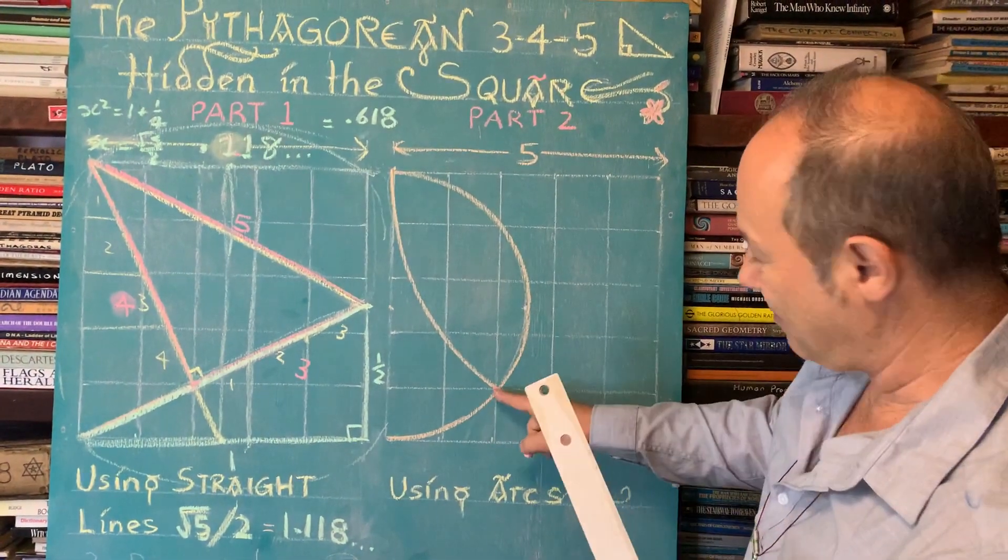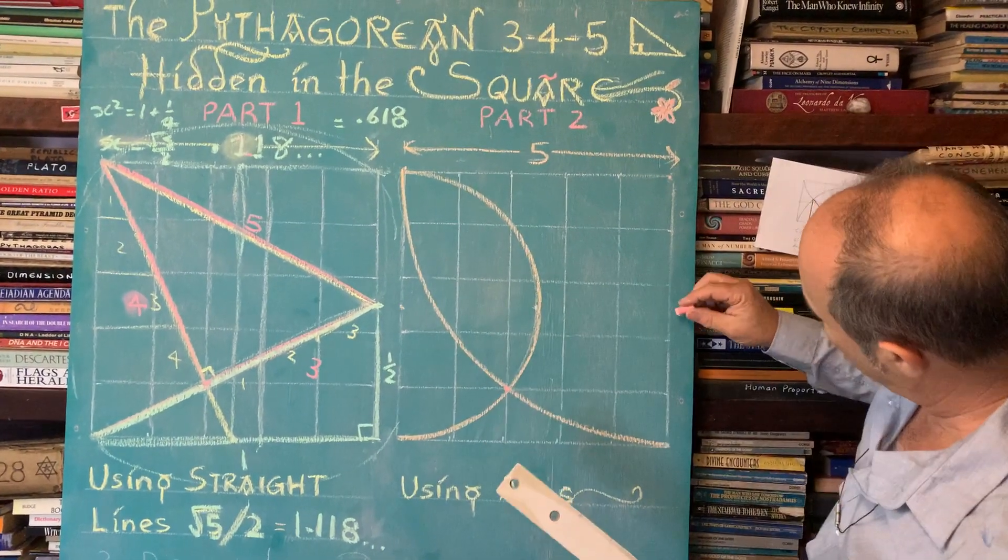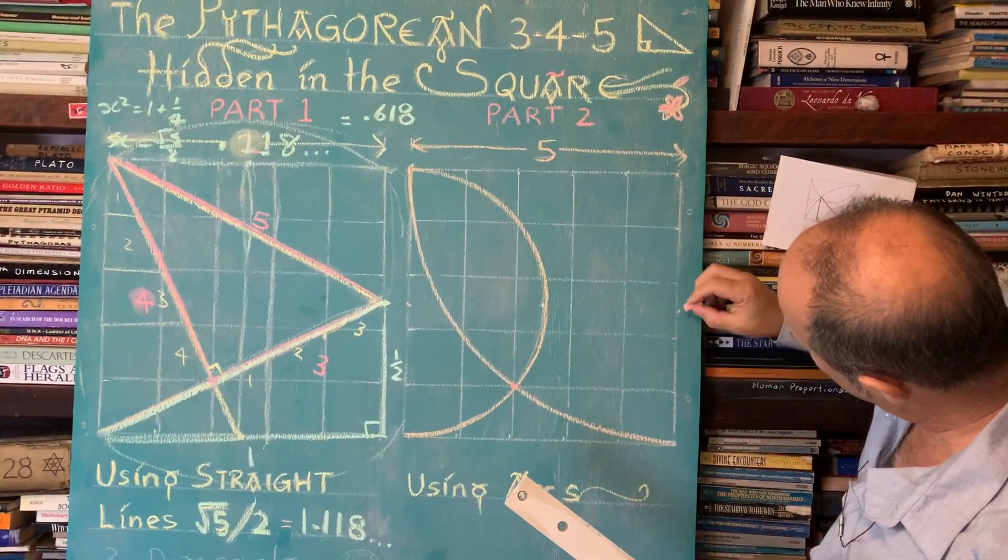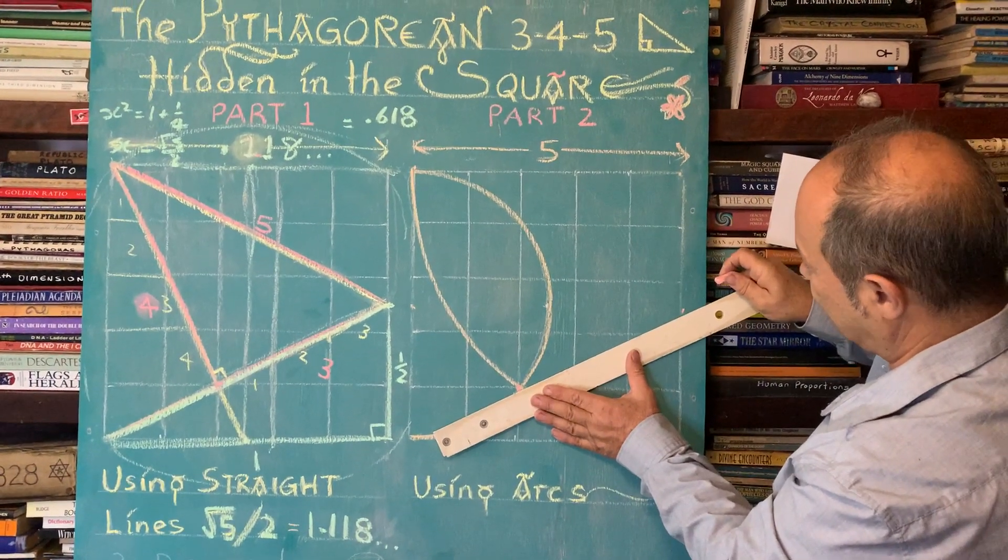Now I need to construct my 3-4-5 triangle. From here, I'm going to draw a line from here to this midpoint over here. So 1, 2, 3, 4, 5 - there's my midpoint. I draw that in and this length here is three units.